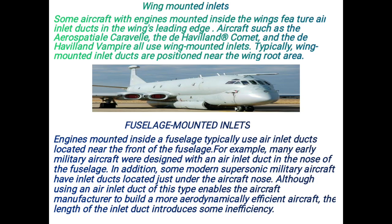Fuselage mounted inlets: Engines mounted inside a fuselage typically use air inlet ducts located near the front of the fuselage. For example, many early military aircraft were designed with an air inlet duct in the nose of the fuselage. In addition, some modern supersonic military aircraft have inlet ducts located just under the aircraft nose. Although using an air inlet duct of this type enables the aircraft manufacturer to build a more aerodynamically efficient aircraft, the length of the inlet duct introduces some inefficiency.